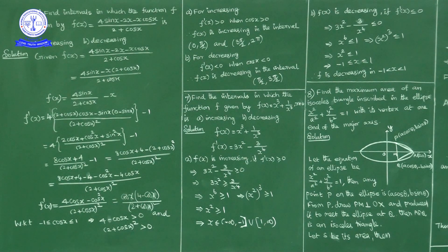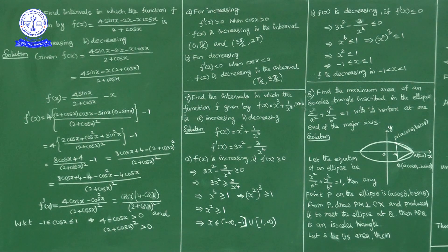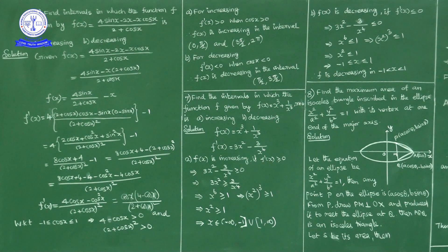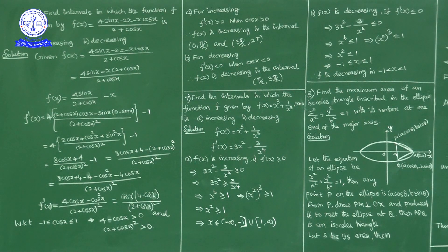Question number 7: find the intervals in which f(x) = x³ + 1/x³ is increasing and decreasing. f'(x) = 3x² + derivative of x⁻³ = 3x² − 3/x⁴.